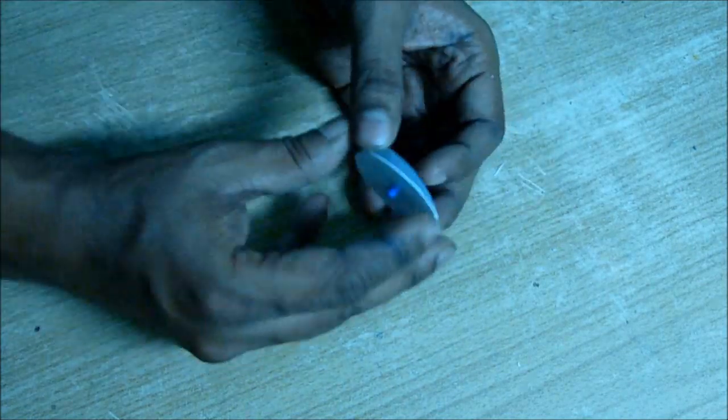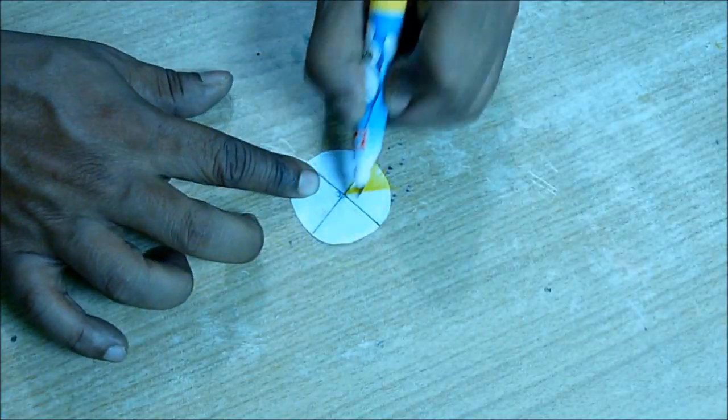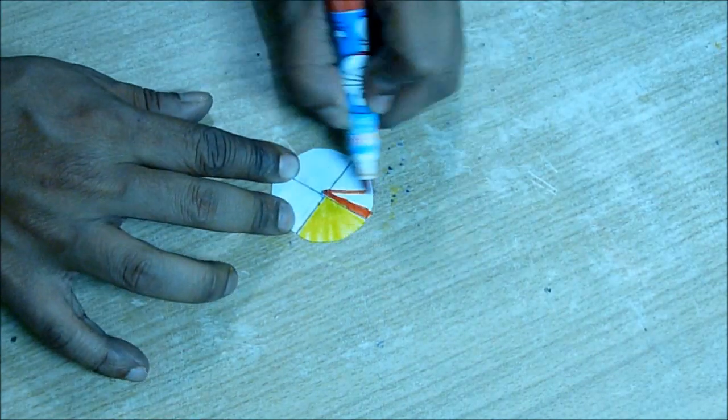Then take the paper, divide into four, and color 50% red and 50% yellow.